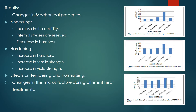Let's start with the changes in the mechanical properties. When the specimen is subjected to annealing, the ductility of the material is supposed to increase whereas the internal stresses are relieved, but that comes at the cost of hardness. The main reason for the decrease in hardness is the slow cooling rate, because the carbon content in the material gets enough time to react with the oxygen, thereby decreasing the carbon content.